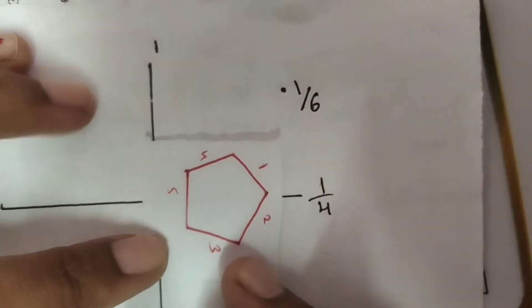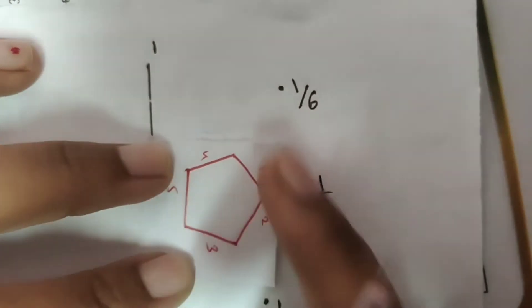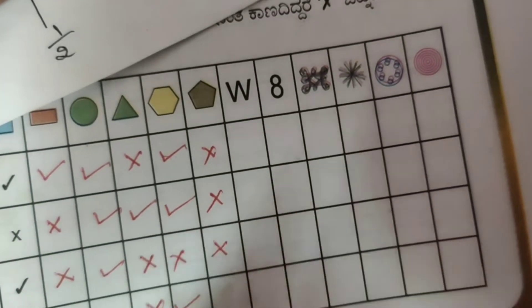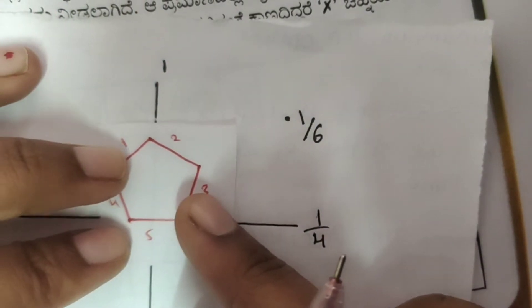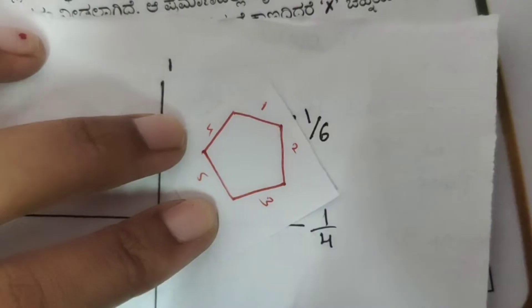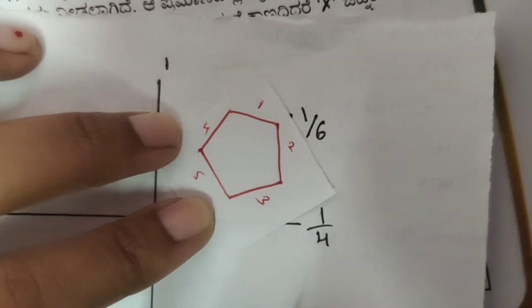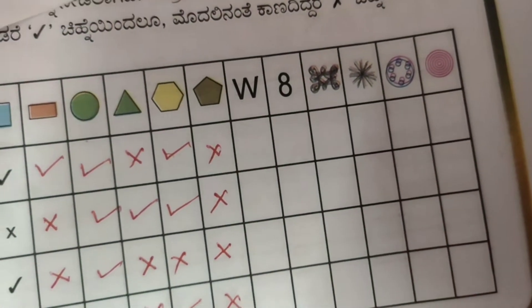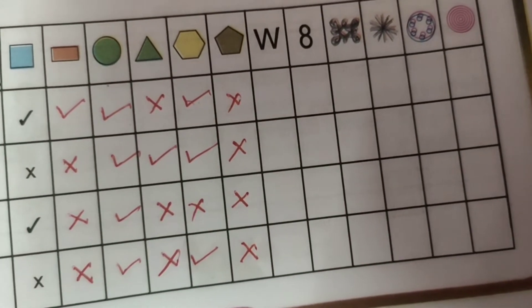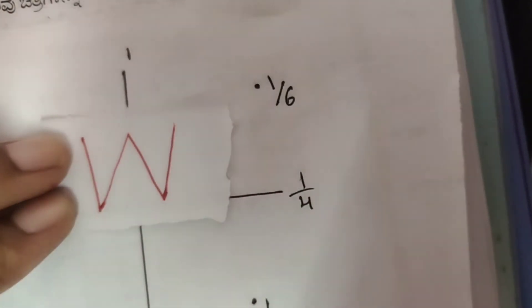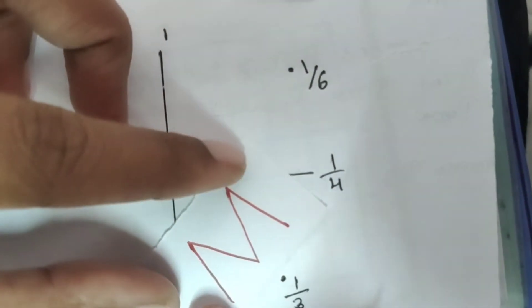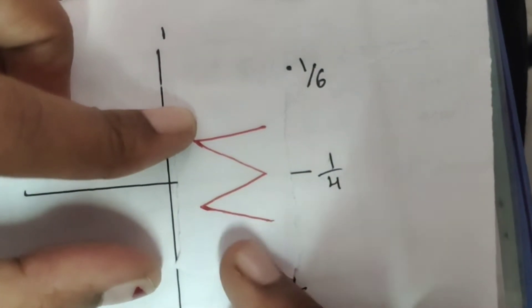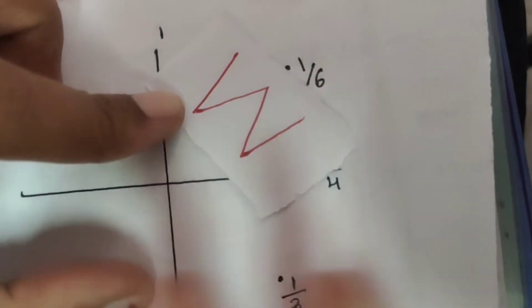Shape is 1 by 4 — so 1 by 4 is 1 by 4. Fifth one is 1 by 6. Is this the original shape? No. So this is the original shape? No. Apply 1 by 3 turn — wrong. 1 by 4 turn — wrong. 1 by 6 turn — wrong.